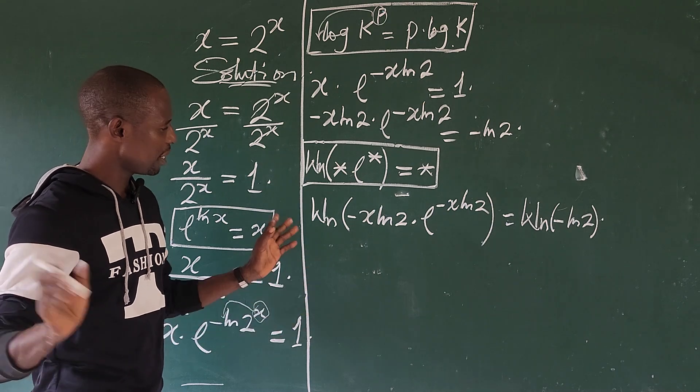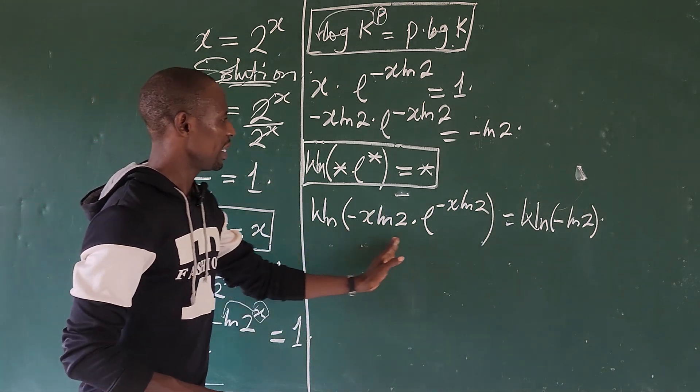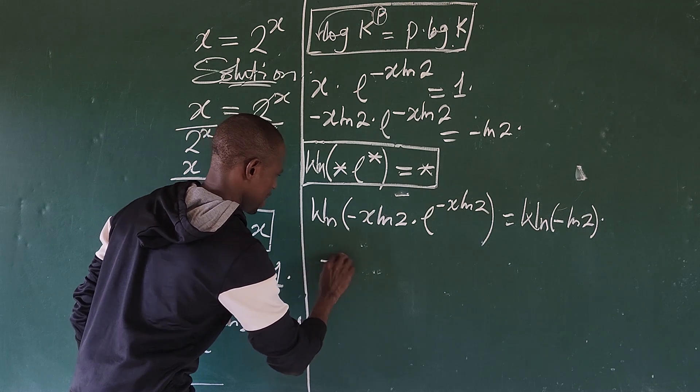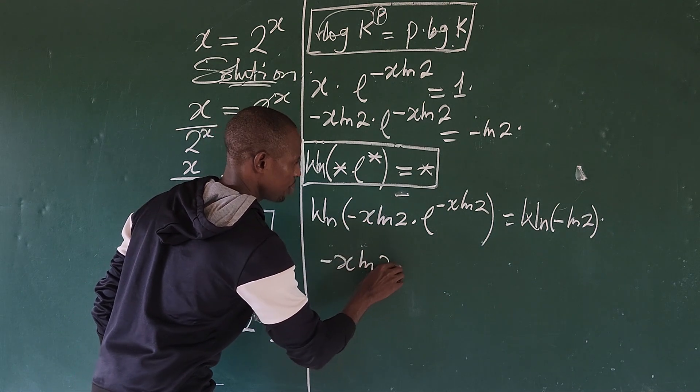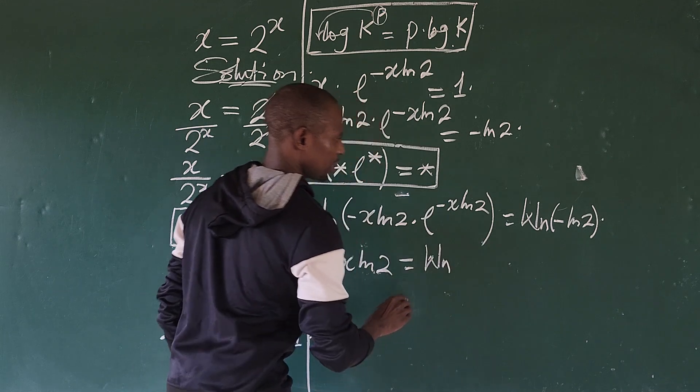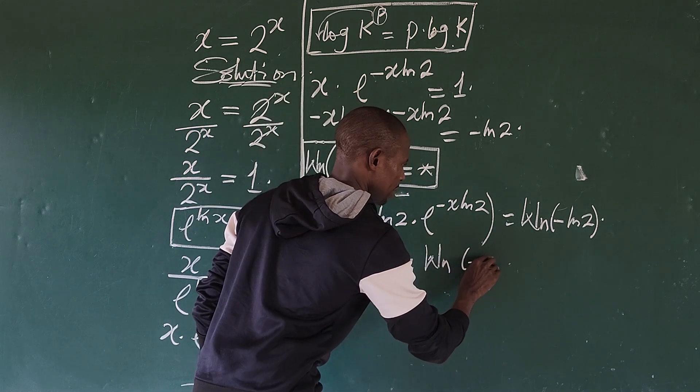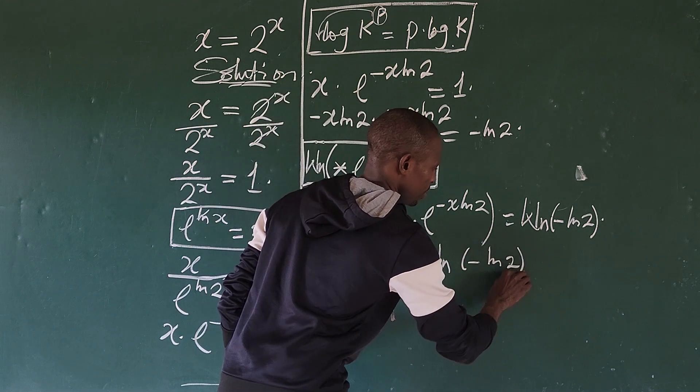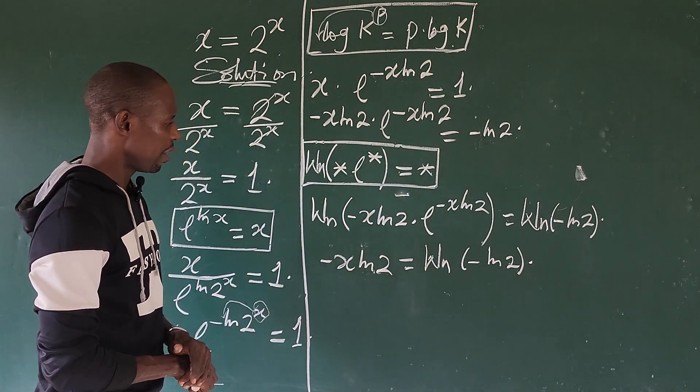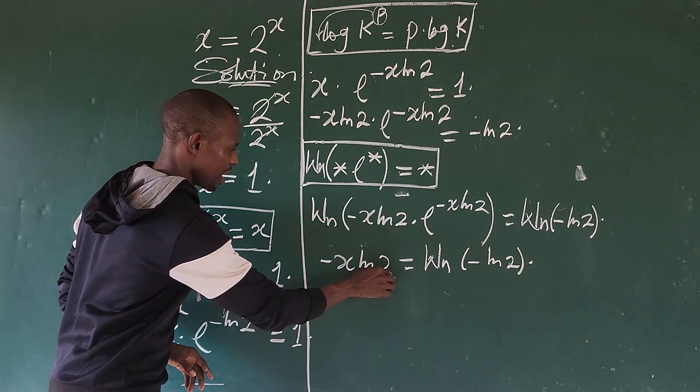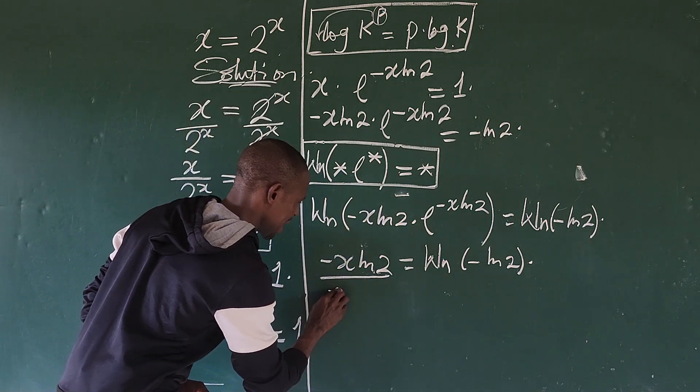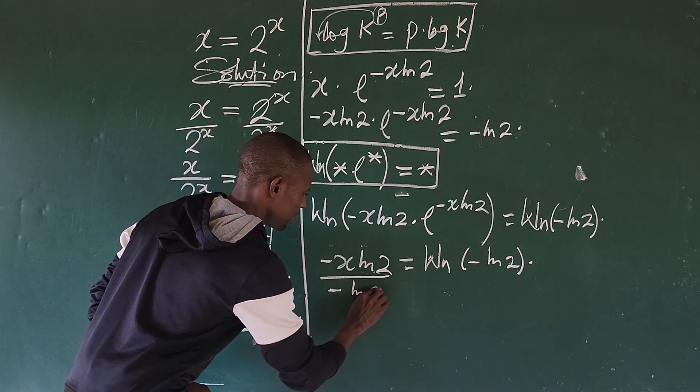Are we learning something here? So what happens, everything here we turn to give us minus x ln of 2 equal to our Lambert W function, which is W of minus ln of 2. Easy, we're looking for x, so for us to get x we have to divide by minus ln of 2.